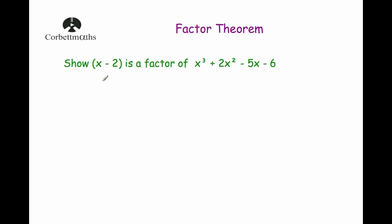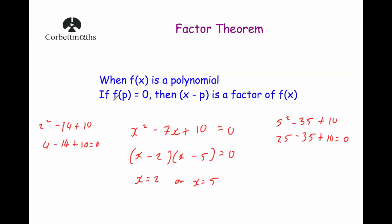Our first example says: show that x minus 2 is a factor of x cubed plus 2x squared minus 5x minus 6. To show that x minus 2 is a factor, I just need to substitute 2 into the polynomial, and if that equals 0 then x minus 2 is a factor, because factor theorem says if f of p equals 0, then x minus p is a factor.